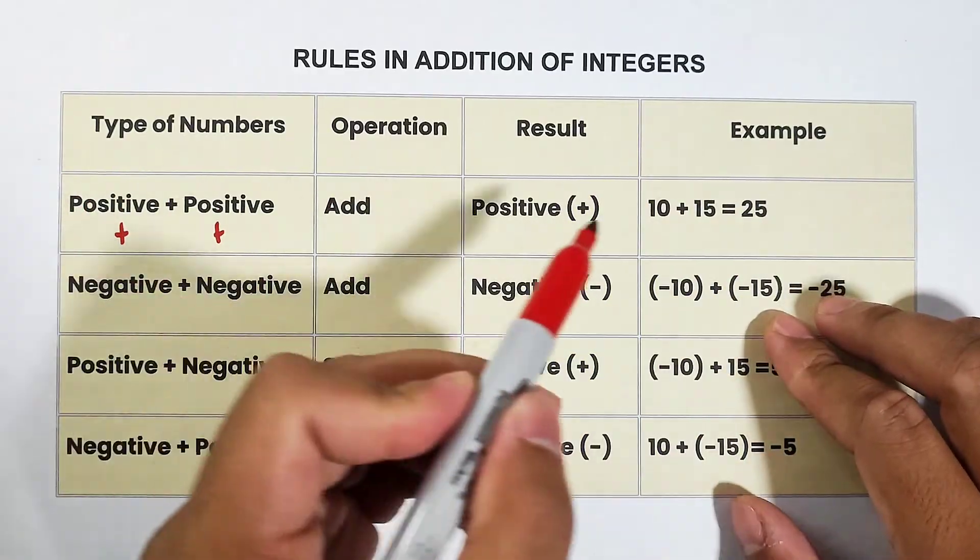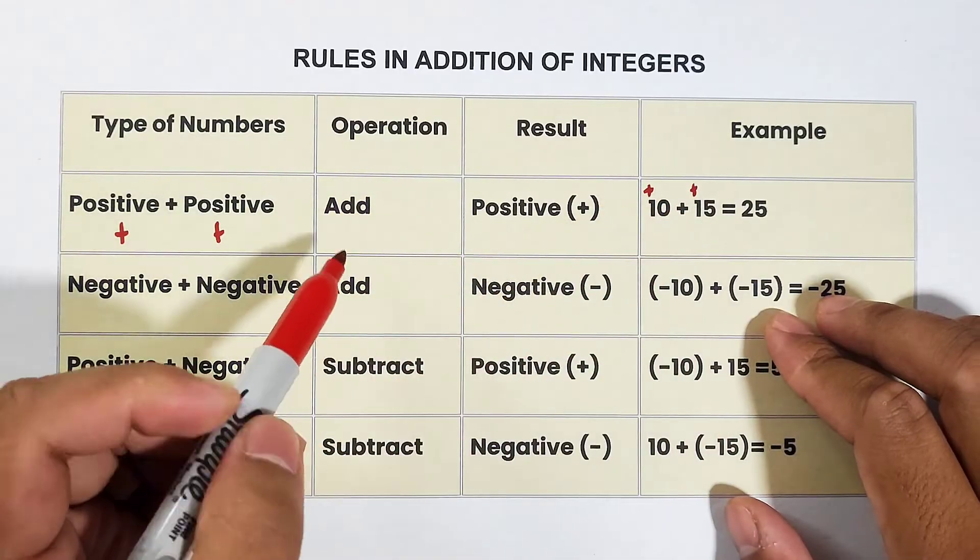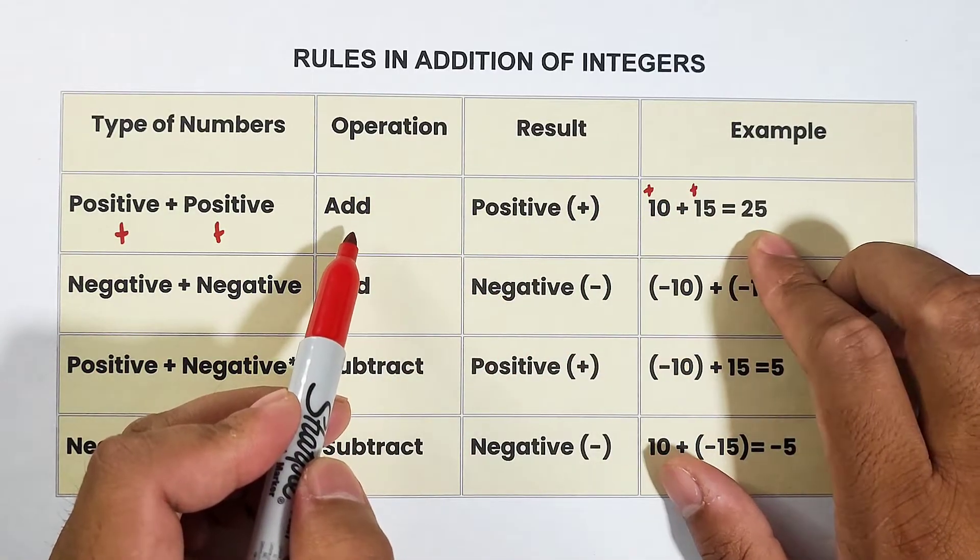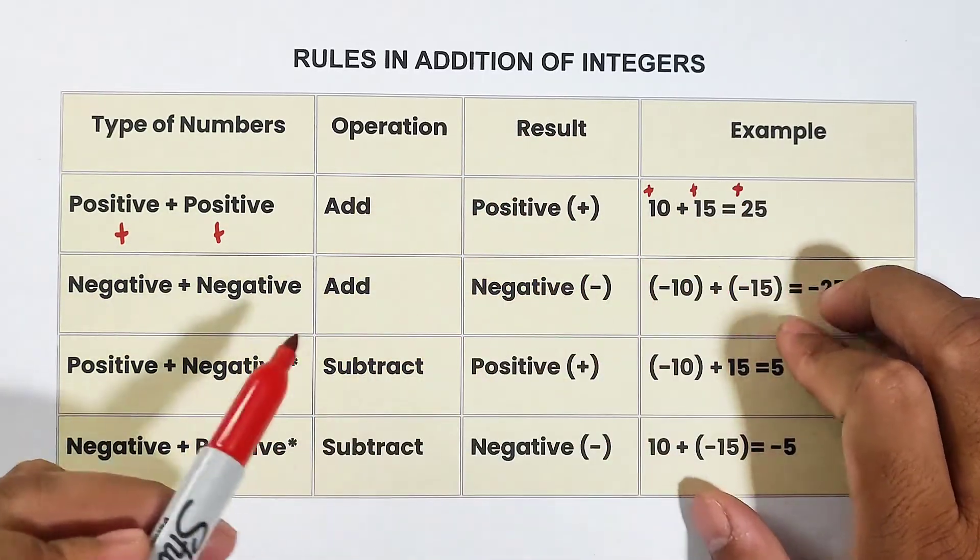And for example, this one, 10 and 15, this is positive and this is also positive. You need to add 10 and 15, that is 25. And for the result, the answer is also positive.